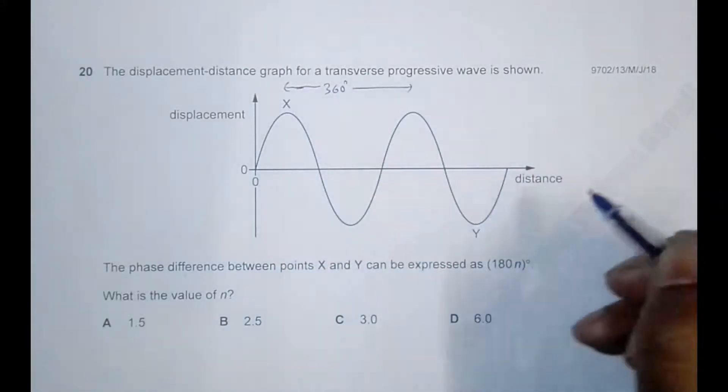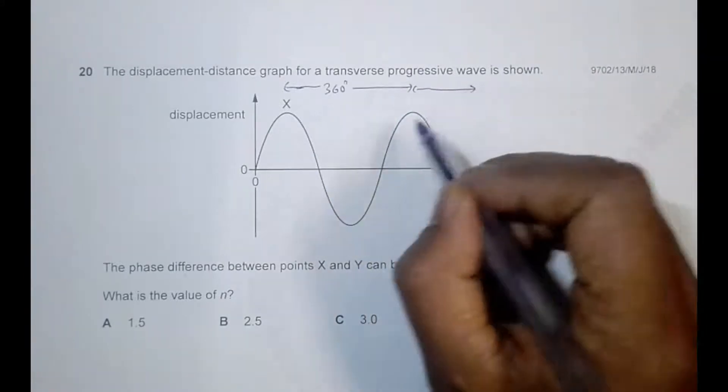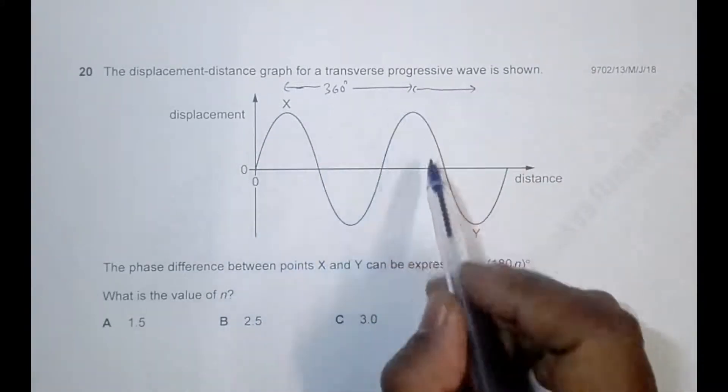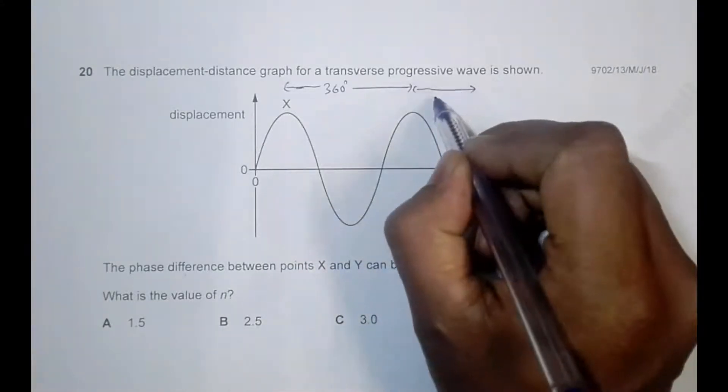crest to crest. And from here to here, it is half of the wave. From here to here is a full wave, and from here to here it is half a wave, so it's equal to